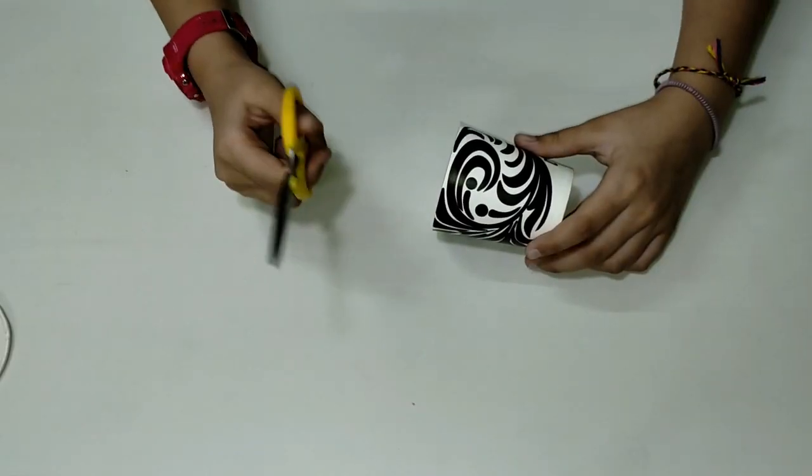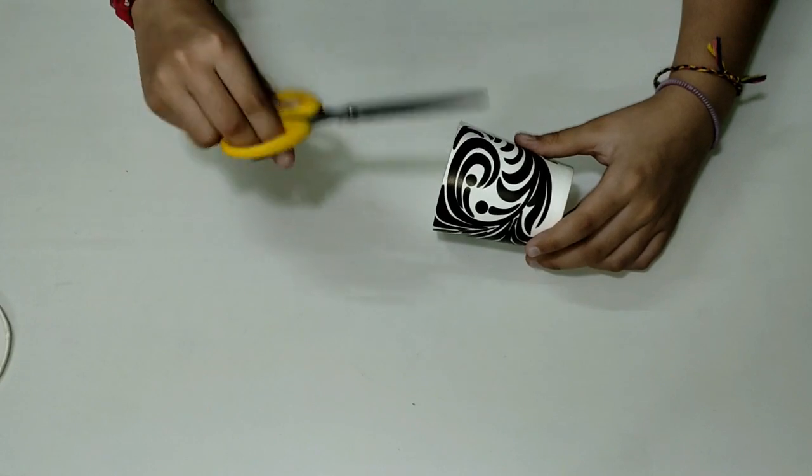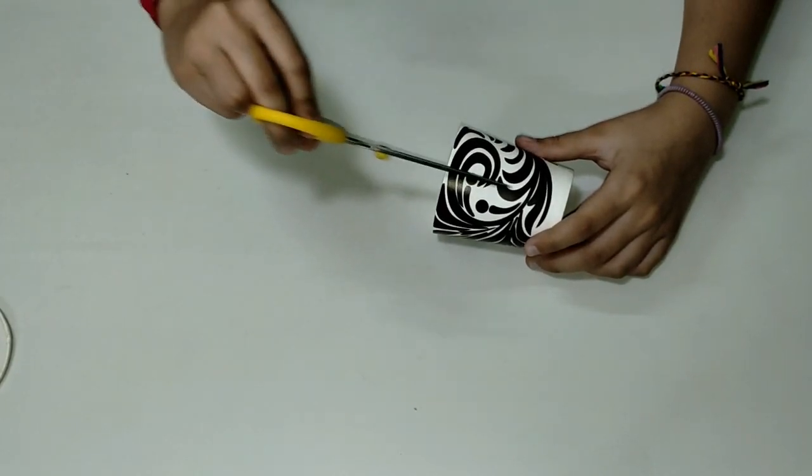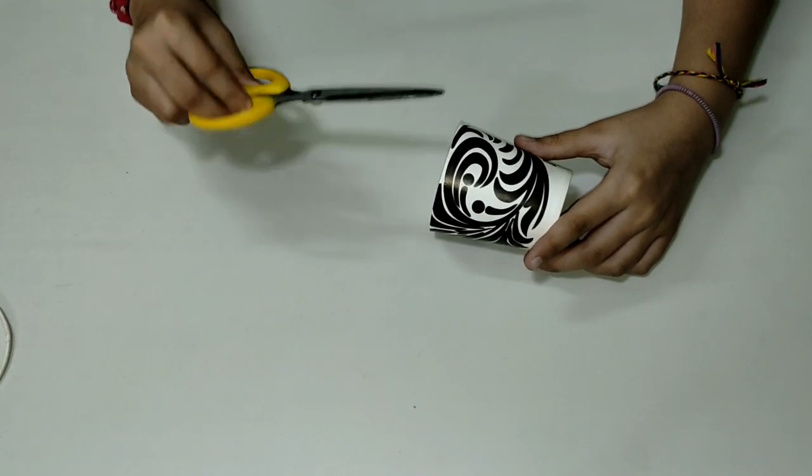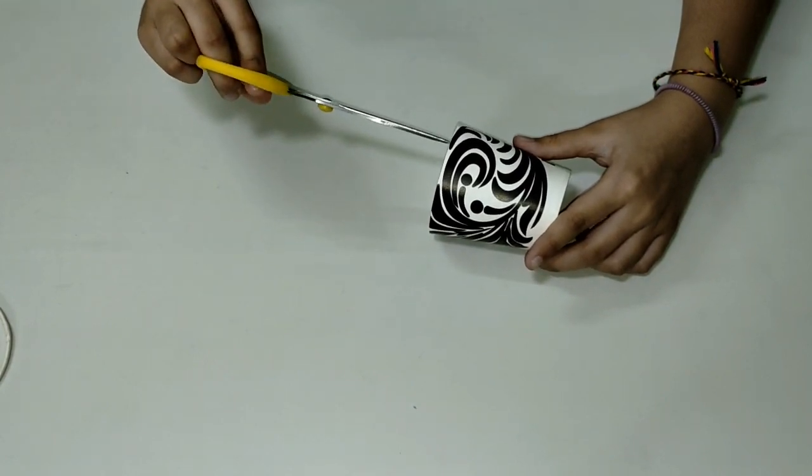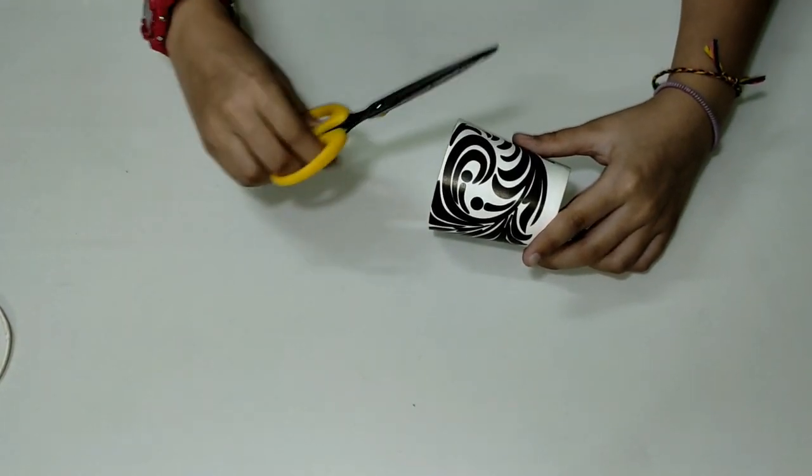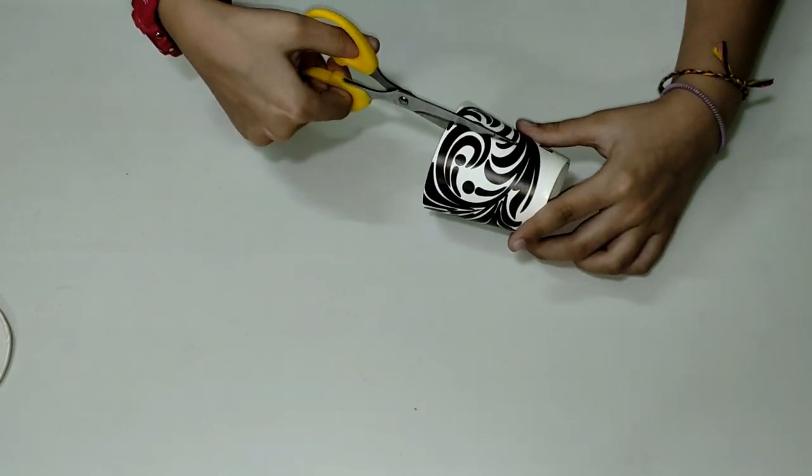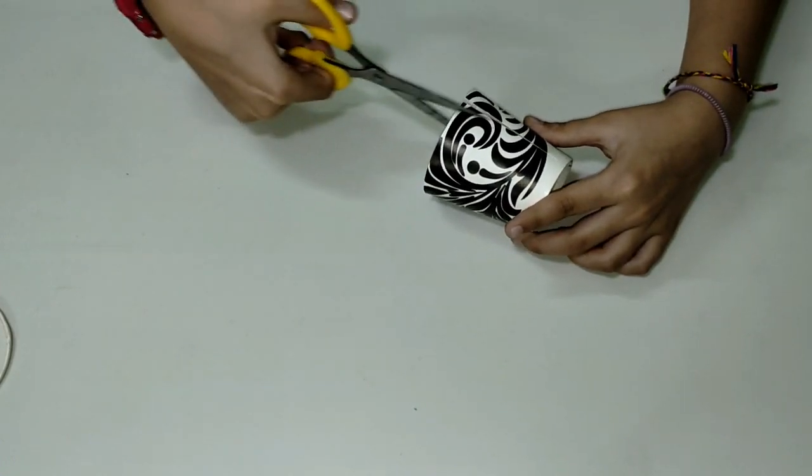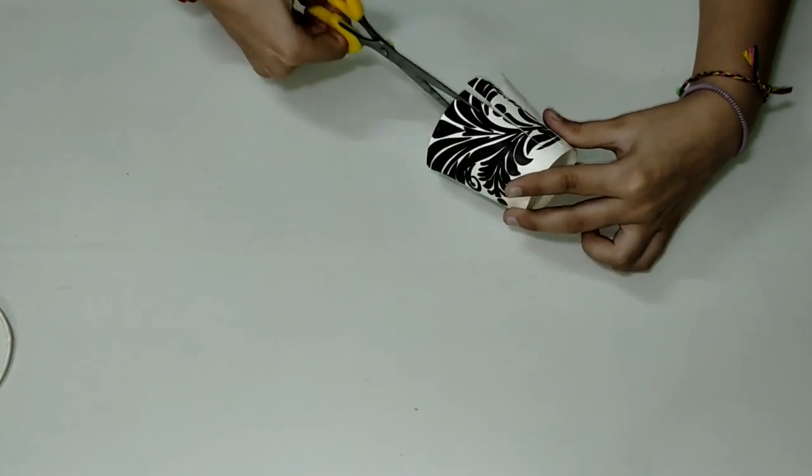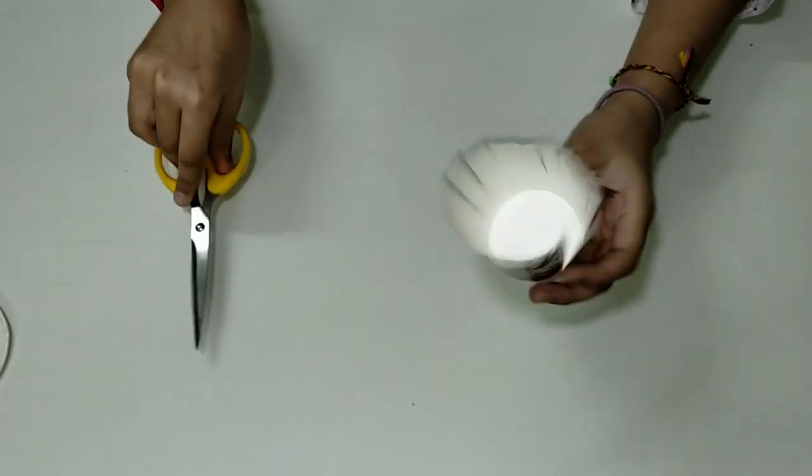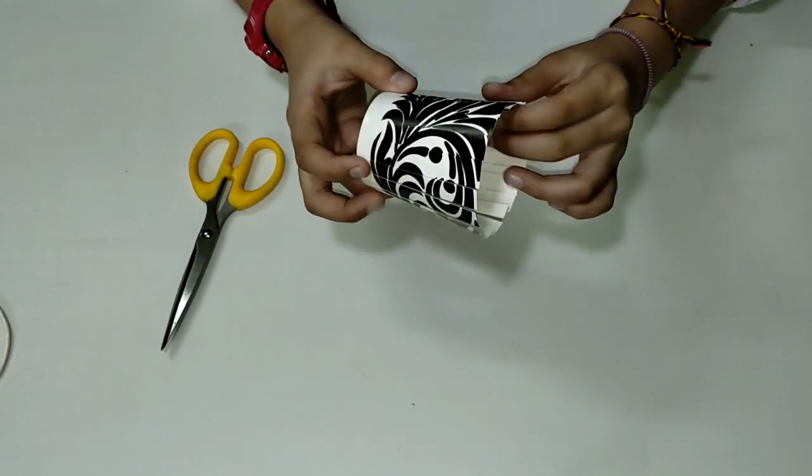So for the next step we'll cut this cup into straight lines like this with this width of one centimeter and we have to cut them from this edge to this edge completely. There we go. Now we have this cup all cut.